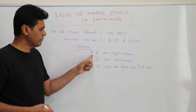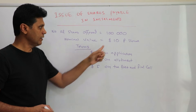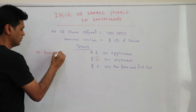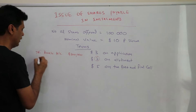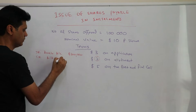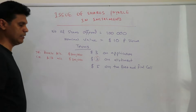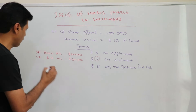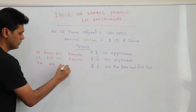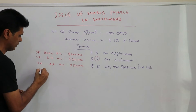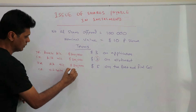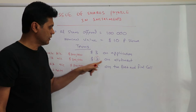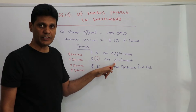First, the company receives the application money of $3 per share on 100,000 shares. Debit bank account $300,000 and credit application and allotment account $300,000. Then this money is transferred to the ordinary share capital account: debit application and allotment account $300,000 and credit ordinary share capital account $300,000.